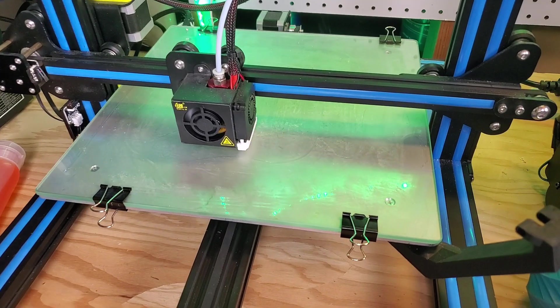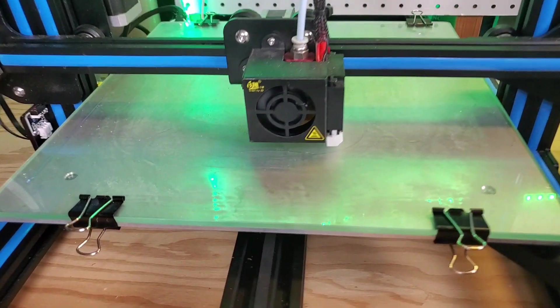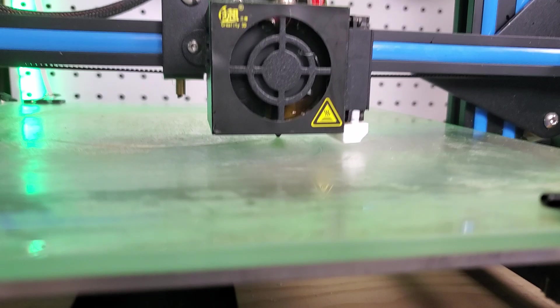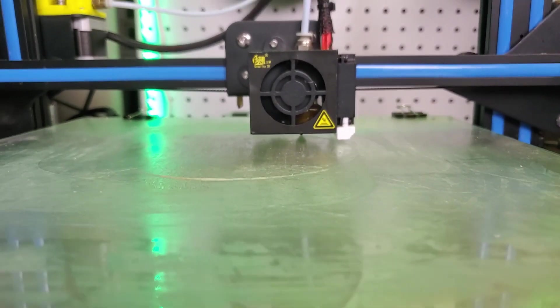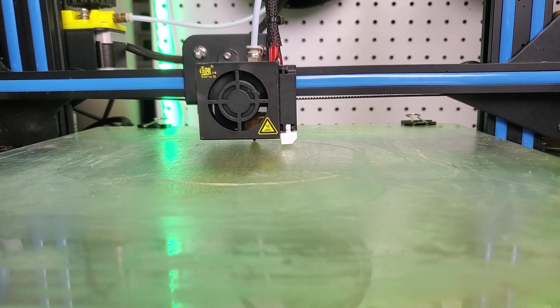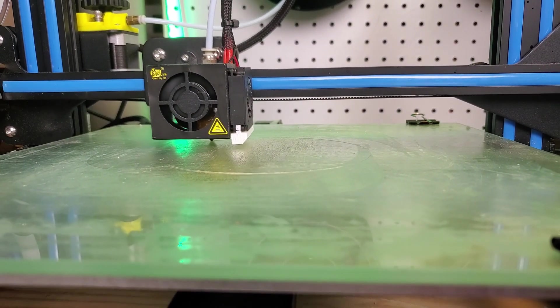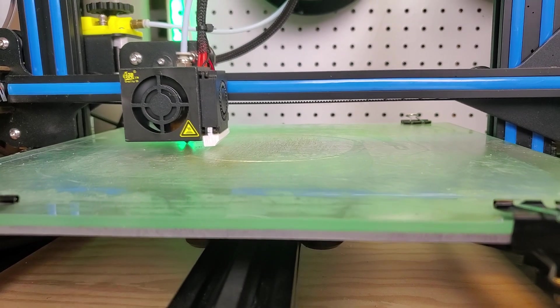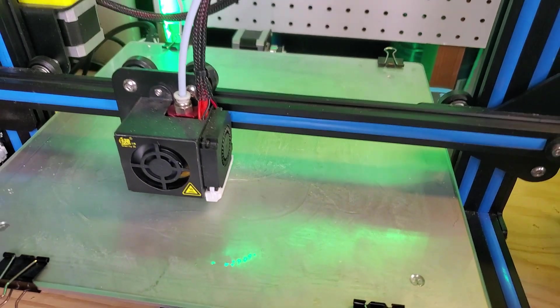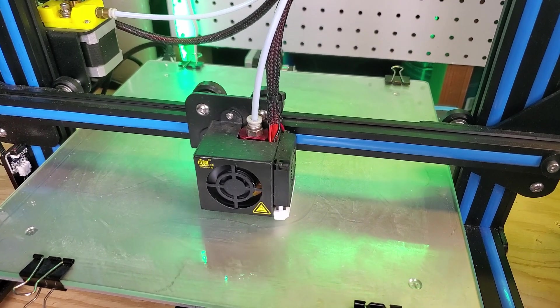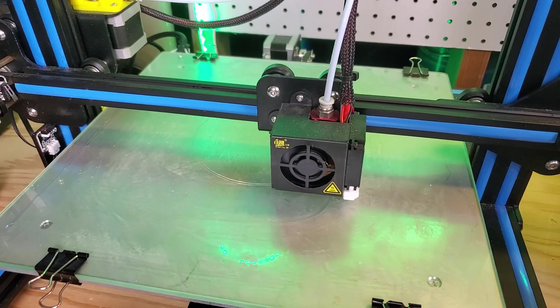This is PETG, so normally you would use a heated bed. I'm doing three skirt lines just to prime the nozzle first, and that's going to print this pretty big circle. It's going to be all flat first layer to hopefully see if it'll stop the warping.